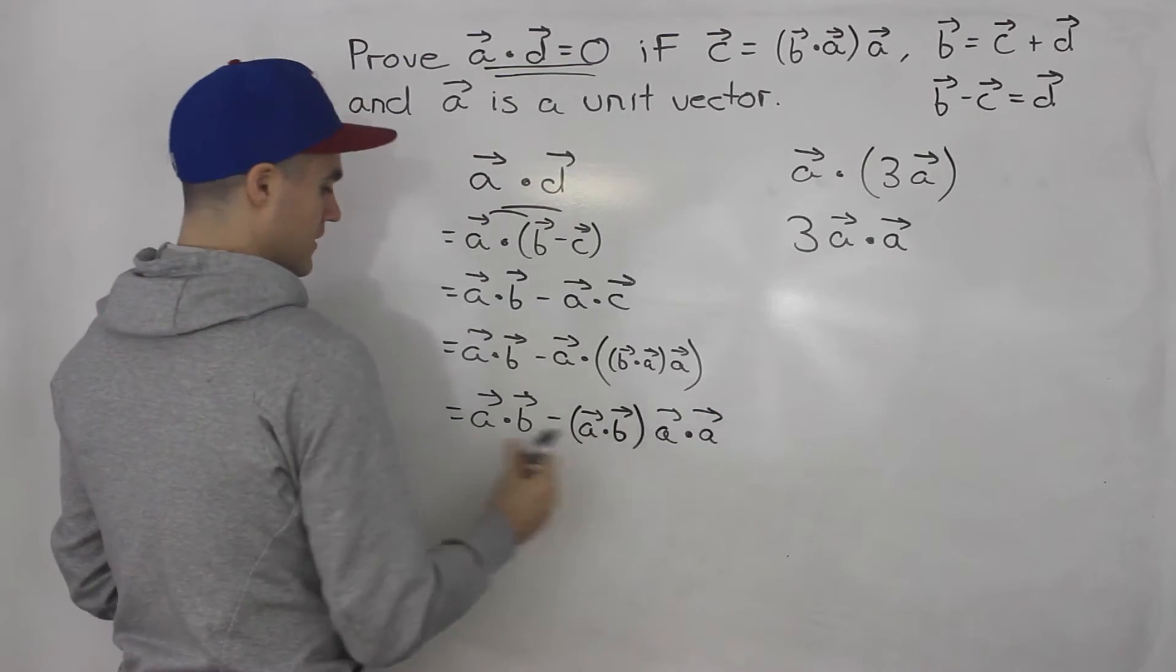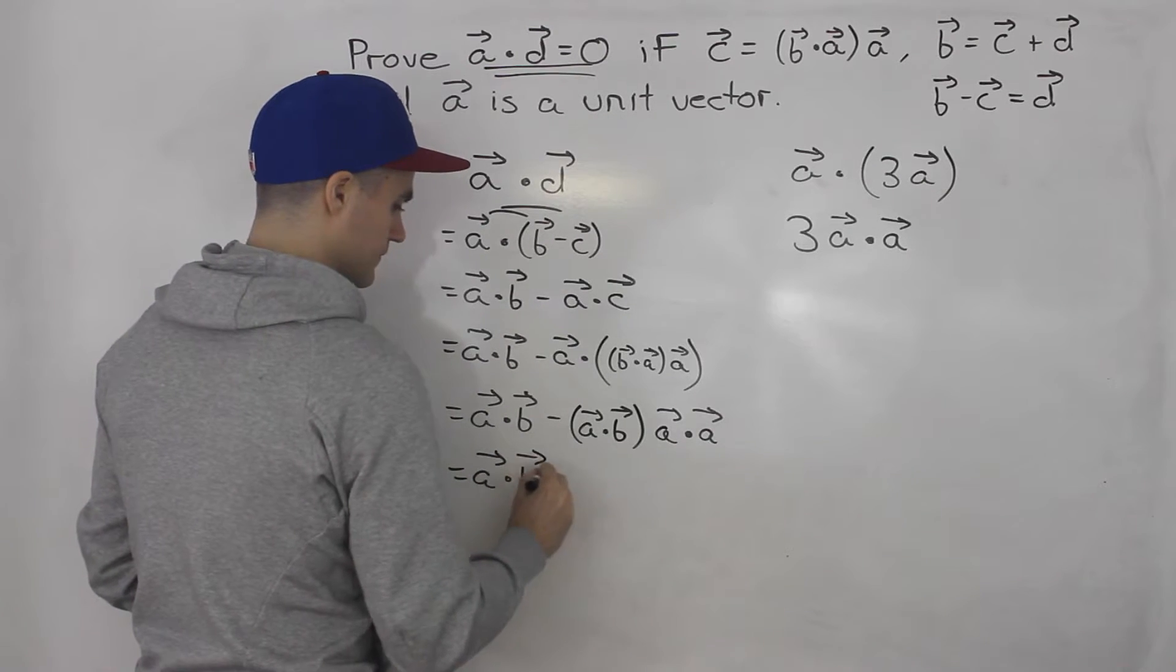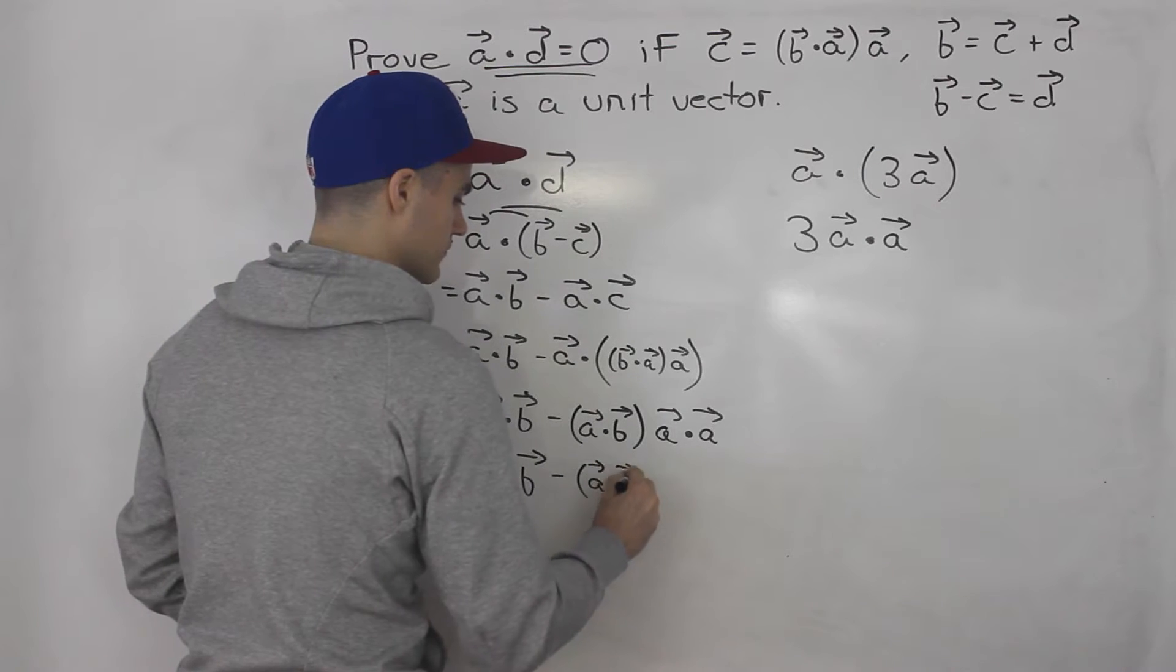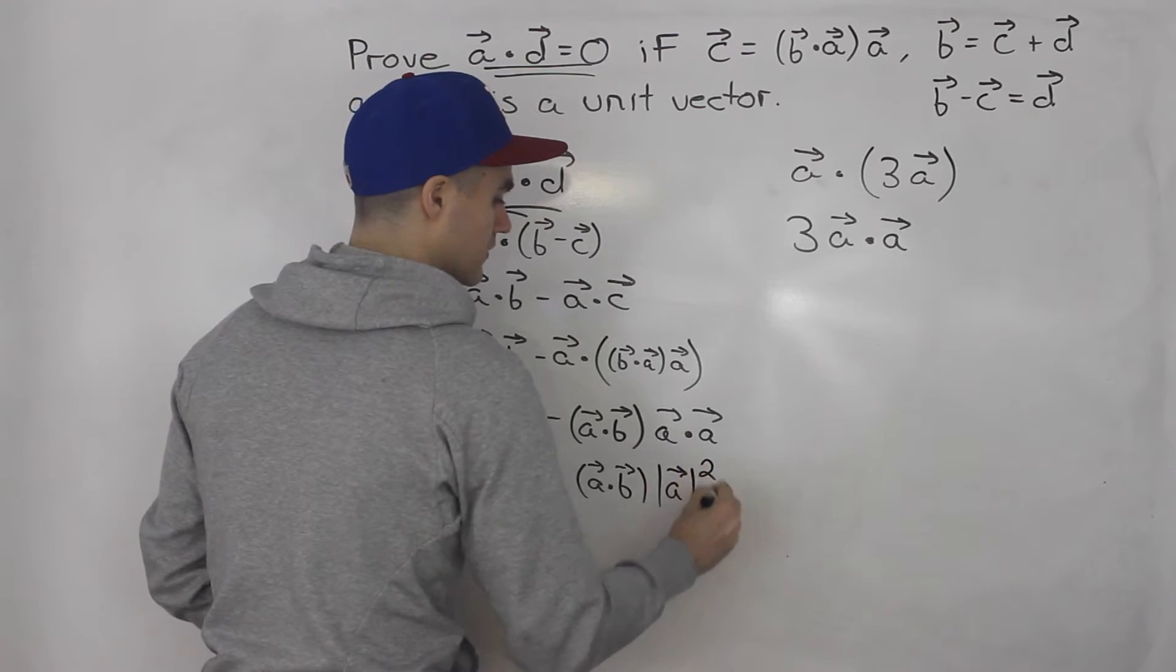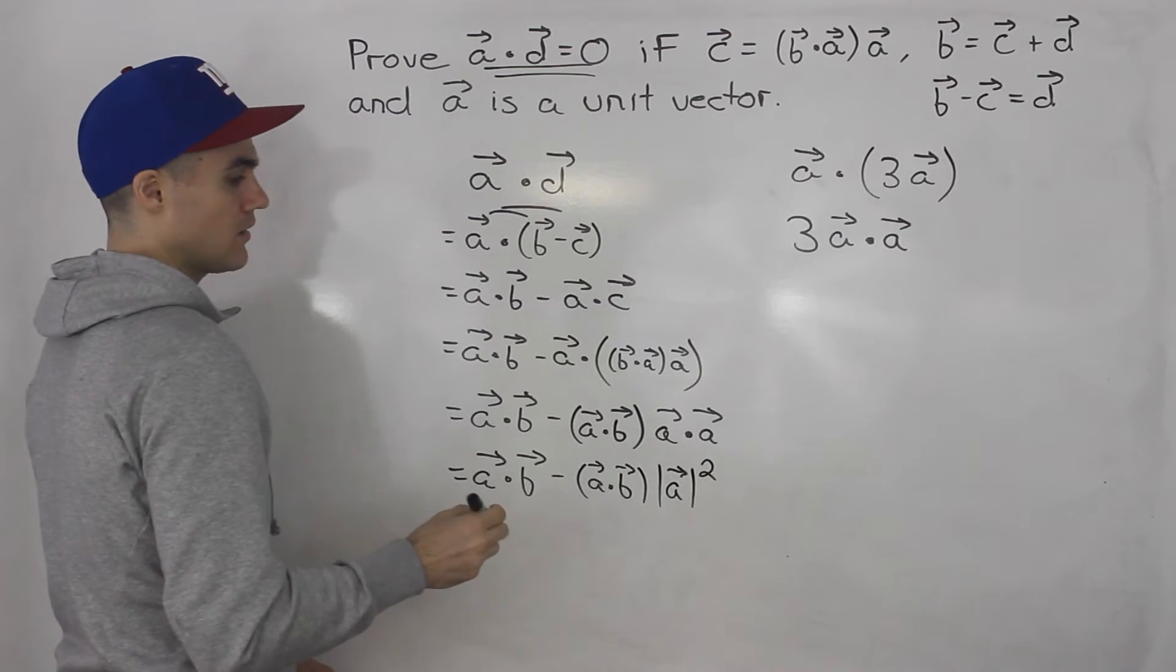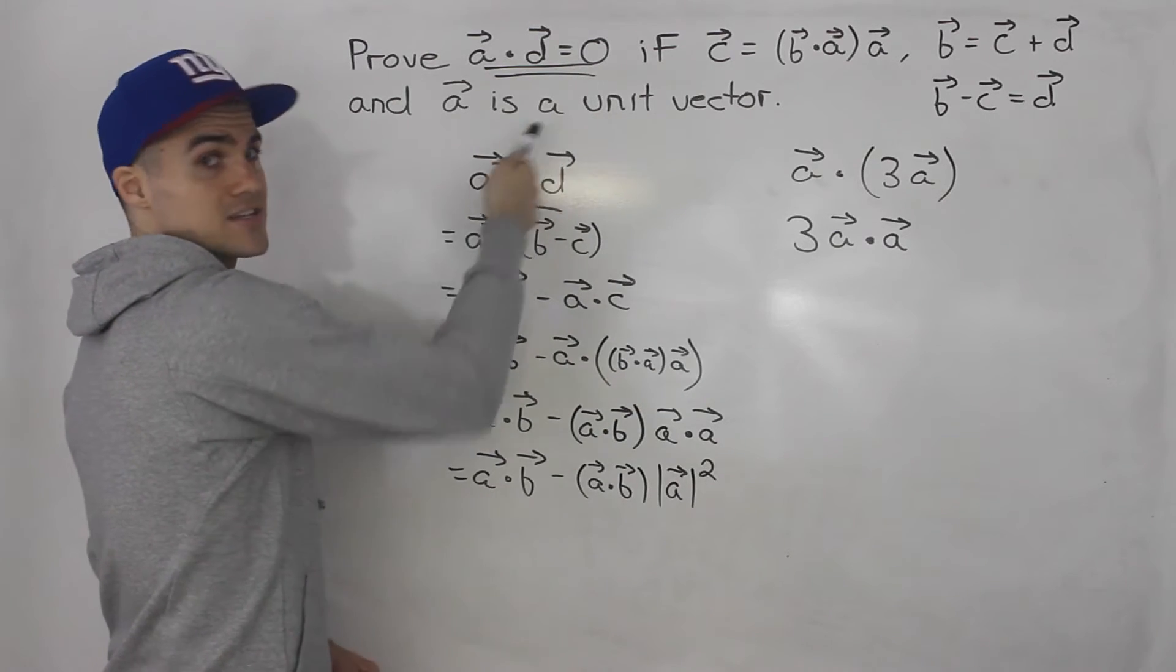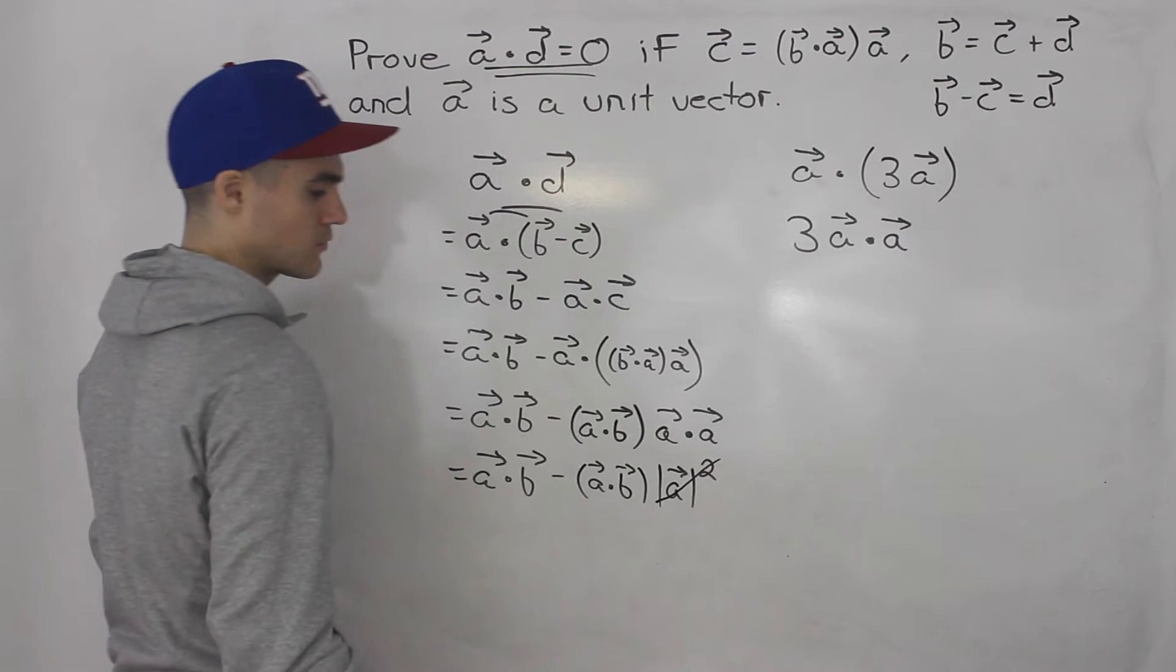Now a dot vector a, we can rewrite that as the magnitude of a squared. And we know that the magnitude of a is what? It's one, because we're told that a is a unit vector. So this would just be one squared. So just sort of like get rid of that.